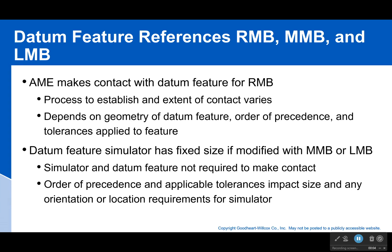Hello everyone, welcome back. We talked about what happens with max material boundary and least material boundary when it comes to a flat datum, but what about when it's a feature of size datum? It is slightly different. When it's regardless of material boundary, to make sure that our actual mating envelope makes contact with the datum feature, it has to come into contact. If that's like a cylinder, you're going to squeeze down the cylinder and hold it — how it's held depends on geometry, order of precedence, and tolerances. However, you can change that: your feature simulator could have a fixed size if it's modified with the max material boundary or least material boundary modifiers. In those cases your simulator wouldn't be required to make contact.